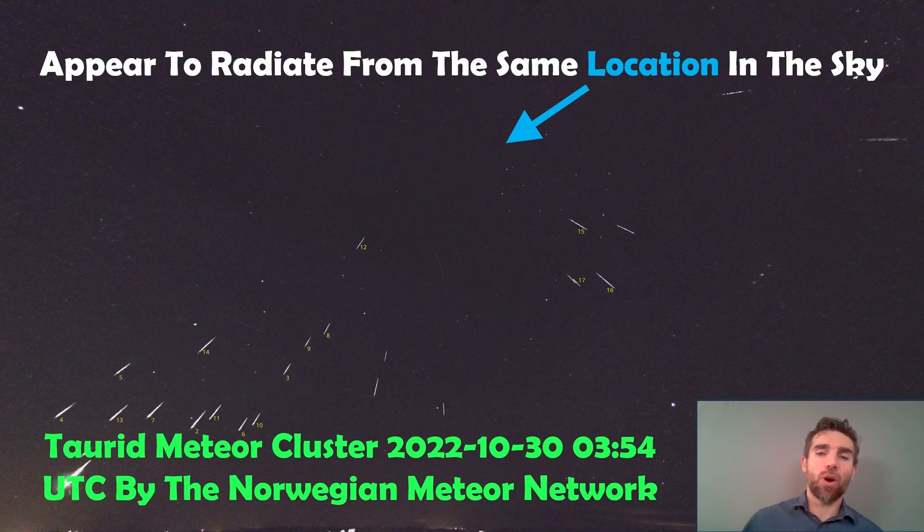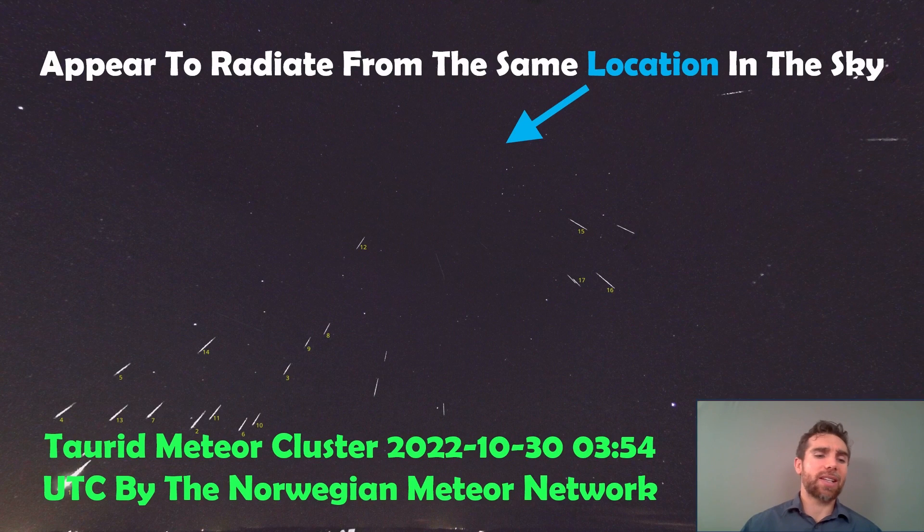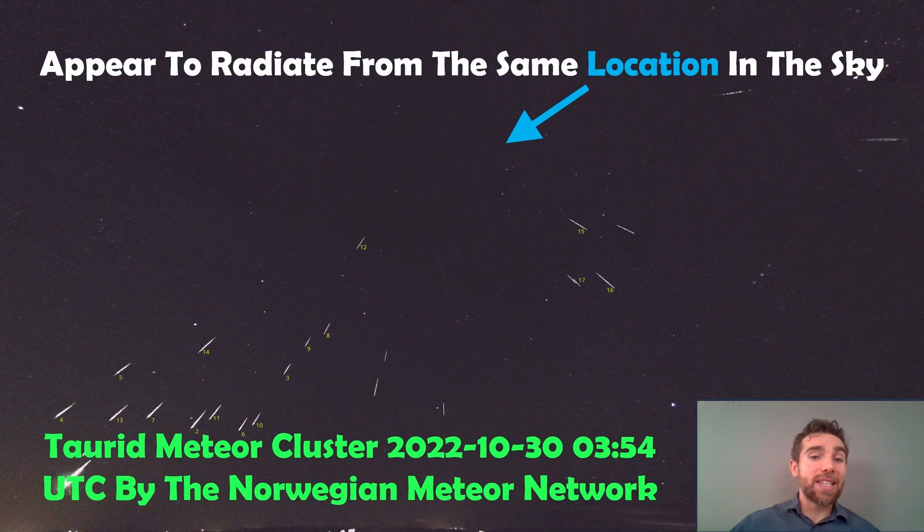This particular one, with the video we just saw, was captured by the Norwegian Meteor Network about a year ago from now, and it was the Taurid meteor cluster basically. This happened during the Taurid meteor shower essentially, and you got quite a significant amount all occurring fairly quickly after one another. And again, you can see that they all appear to come from the same location in the sky.